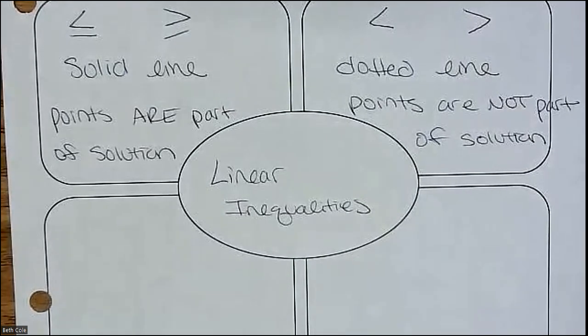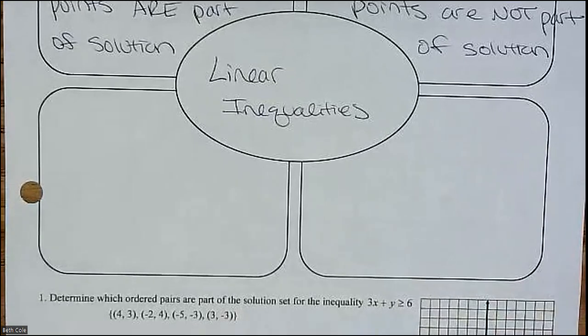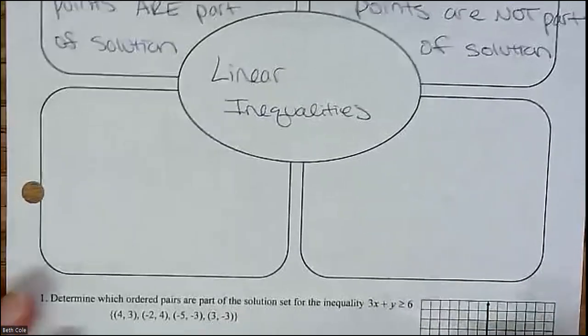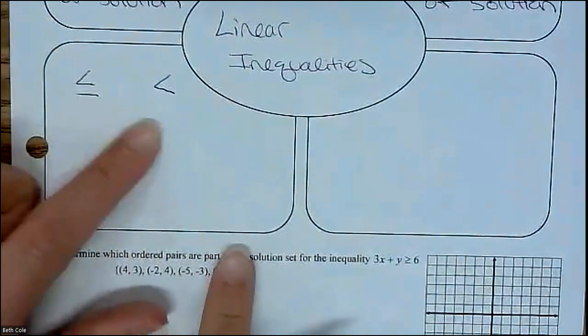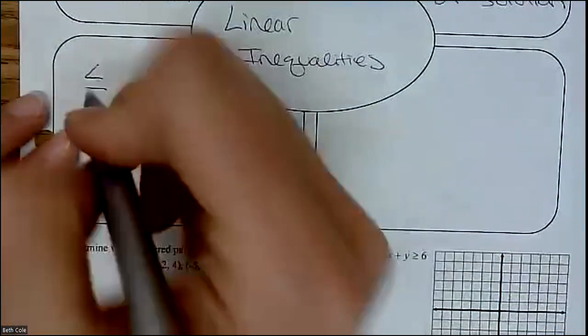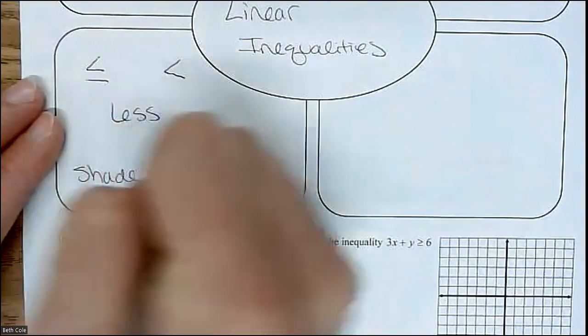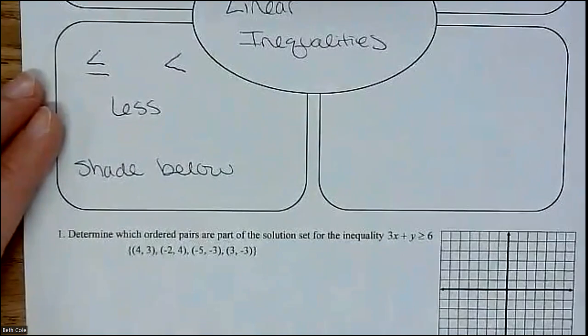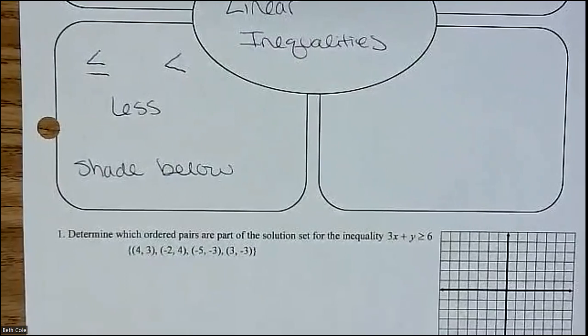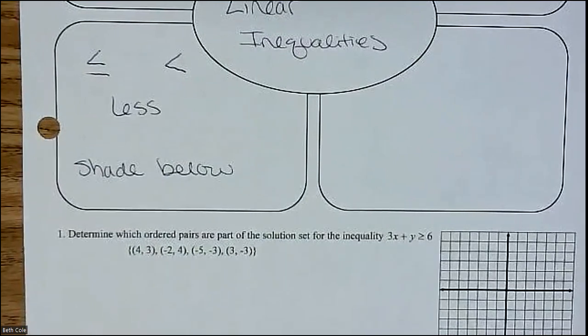Now, you're going to shade in, because you don't just have one singular answer, it's going to be an infinite number of answers. If you see a symbol like this, the less than or equal to, or the less than, that means you're going to shade below the line because you want everything less. It's like you have to be this height or shorter. Like the kiddie ride, they won't let you ride it if you're too tall.